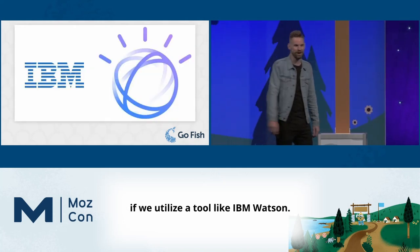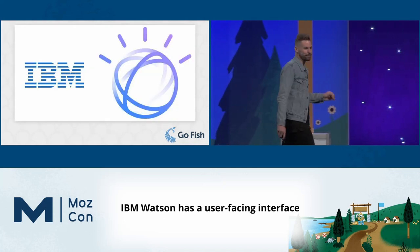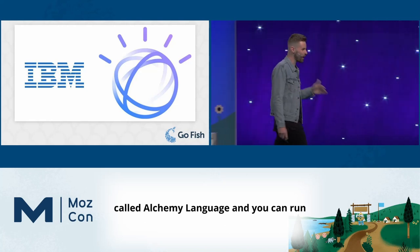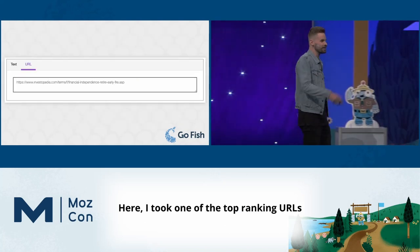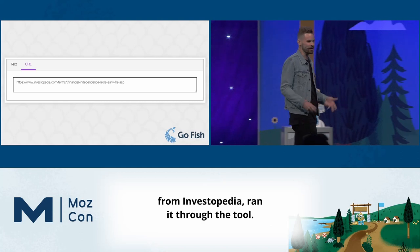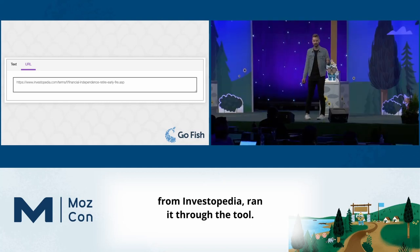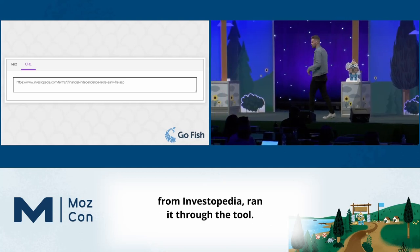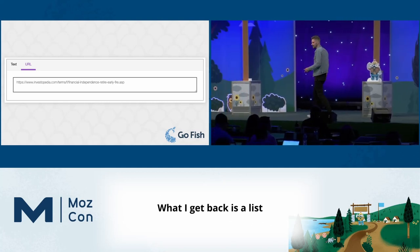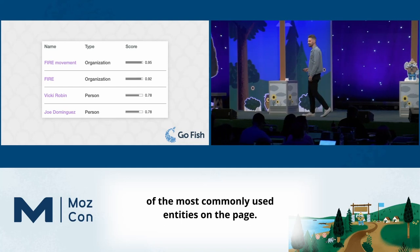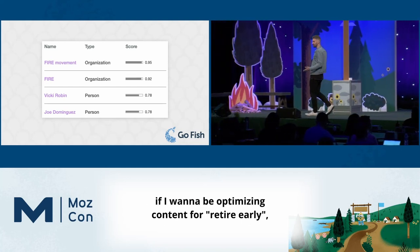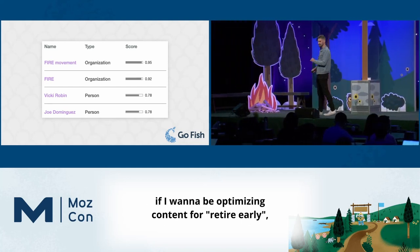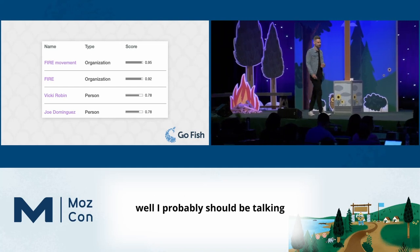We could utilize a tool like IBM Watson. IBM Watson has a user-facing interface called Alchemy Language, and you can run any URL you want through it. I took one of the top-ranking URLs from Investopedia and ran it through the tool. What I get back is a list of the most commonly used entities on the page.